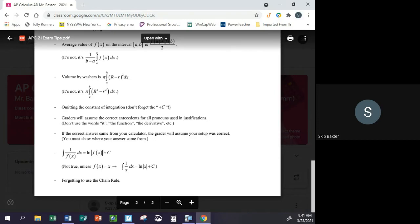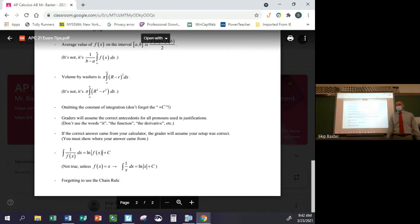This next one, graders will assume the correct antecedents for all pronouns used in justification. Don't say it is increasing, because they're going to be like, oh, I don't know what it is, so you're not getting credit for that. Or don't even say the function, because technically everything we're dealing with is a function, so you can't say the function like there's only one of them. Even if it's clear to you that you mean the original function and not its derivative, its derivative is actually a function also, so you can't say the function or the derivative or whatever. Call it what it is. Call it r prime or f of x or whatever it is. So it's actually less writing for you to call it what it is than for you to call it the function. So don't call it the function. And definitely don't use the word it ever. Say what it is. They're going to assume that you don't know.